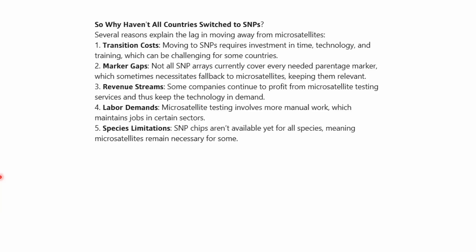The second reason is marker gaps — not all SNP arrays currently cover every needed parentage marker, which sometimes necessitates falling back to microsatellites. Here I would disagree. It might be that there are no SNPs in the exact region of current microsatellite markers, but you actually do not need them there. You can just use SNP chips — both the supposed parent and offspring need to be genotyped — and then do the analysis very easily. There might be a short transition period where you genotype animals with both methods for consistency, but you can phase microsatellites out quickly afterwards.